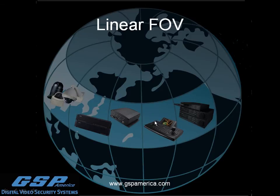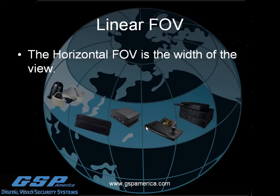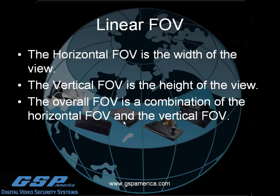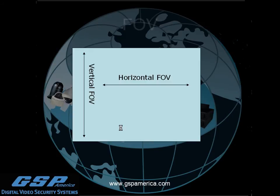Linear Field of View is an actual measurement in feet and inches. The horizontal Field of View is the width of the view in feet and inches, the vertical Field of View is the height, and the overall Field of View is a combination of both. Horizontal is width, vertical is the height.